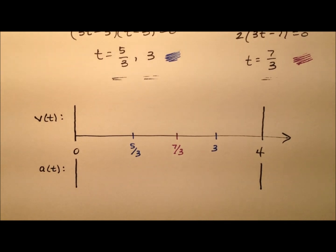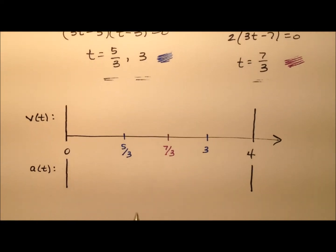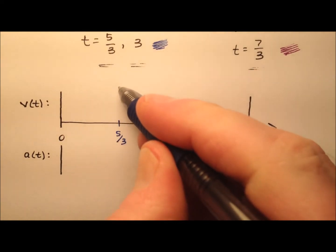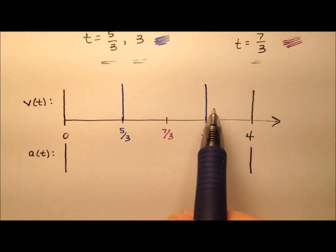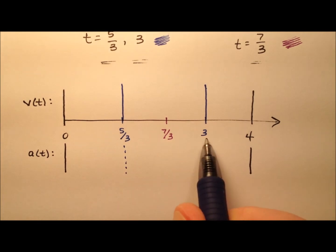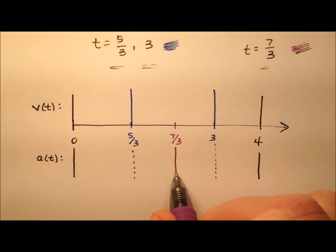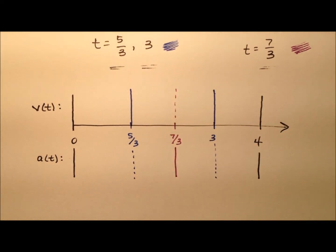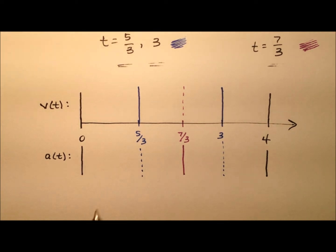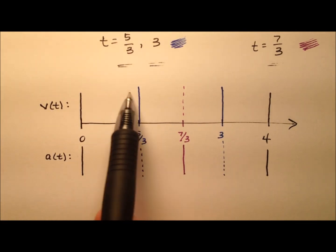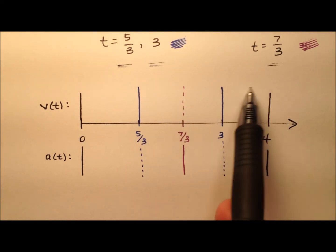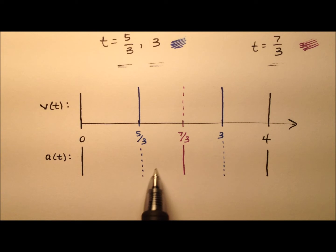The two critical points from velocity are 5 thirds and 3 — I'll mark those with solid lines and break up the velocity region. I'll draw a dashed line for 7 thirds since it still matters for acceleration. Similarly, I'll put a dashed line at 7 thirds on the velocity side. So our number line is broken into four regions. For velocity: three regions. For acceleration: two regions.